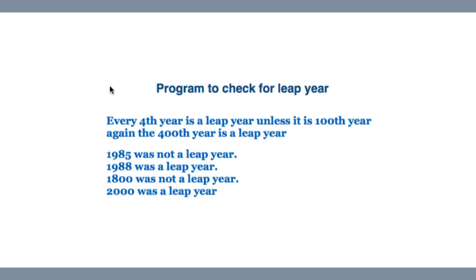This is the final programming example of this section where we have learned if-else. We are going to write a program that checks whether a given year is a leap year or not. We know that leap year comes every fourth year, where we have 29 days in February. Every fourth year is a leap year, but the century — the hundredth year — is not a leap year unless it is also the 400th year.